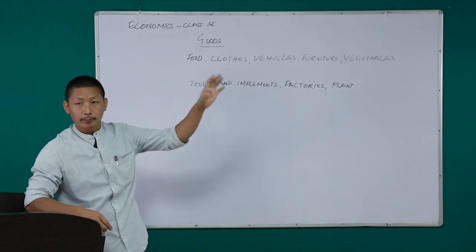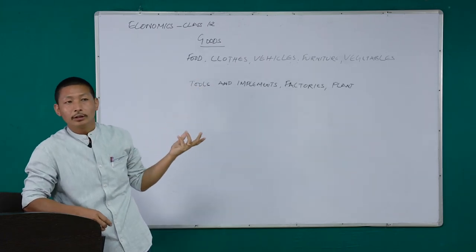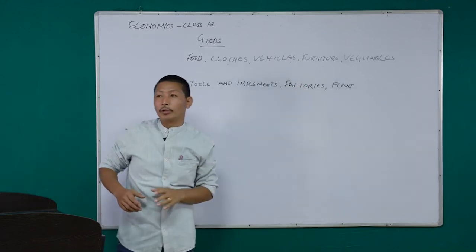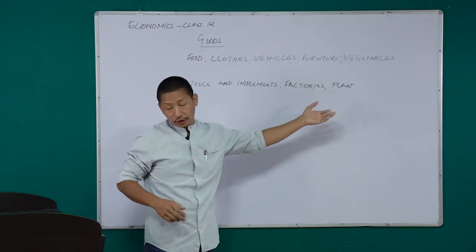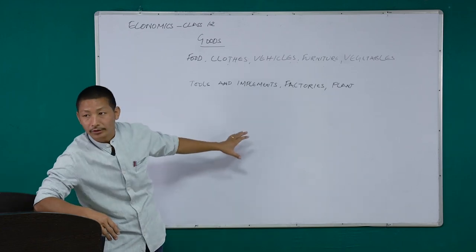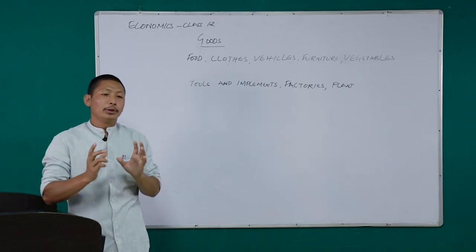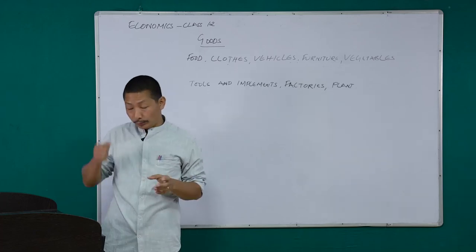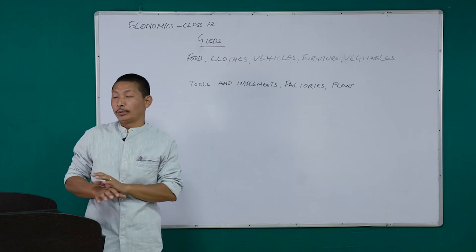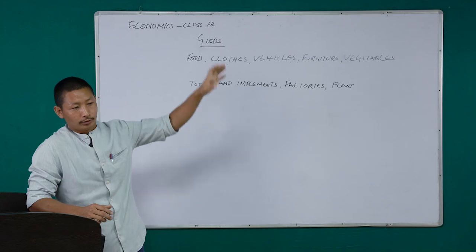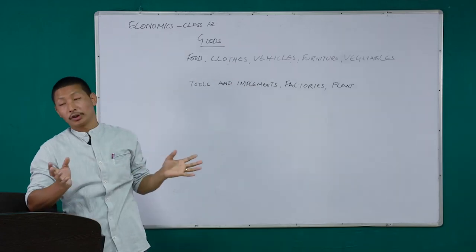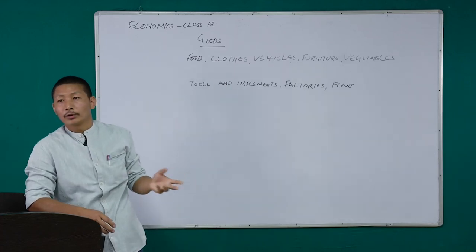Examples of capital goods include factories, plant and machineries, tools and implements, fridge, TV, mobile — because these are things which can be used for a very long period of time. The tools and implements your father inherited from your grandfather — you are still using them. A factory running for 20 or 30 years gives services for a long period of time. Even a JCB excavator, which can dig soil in one hour — those are capital goods.